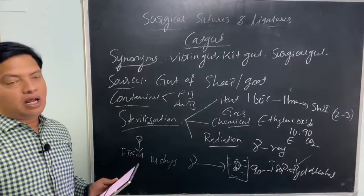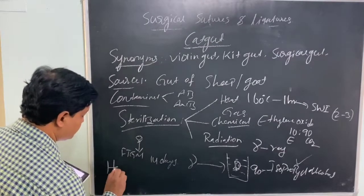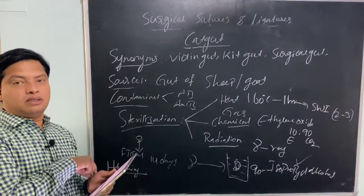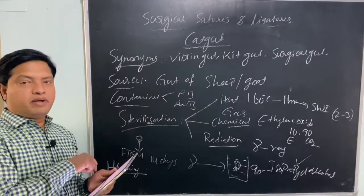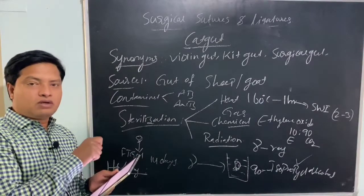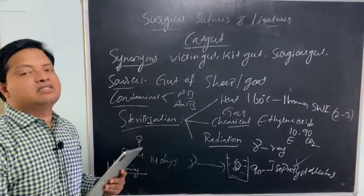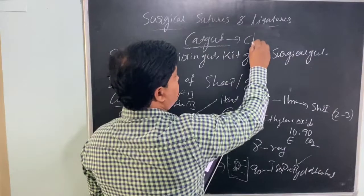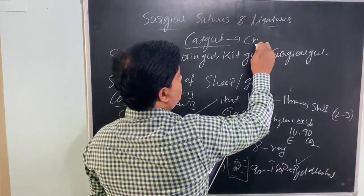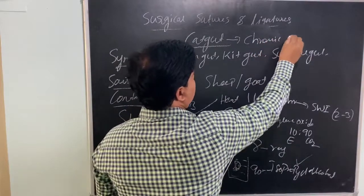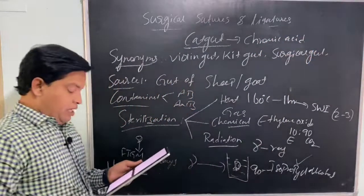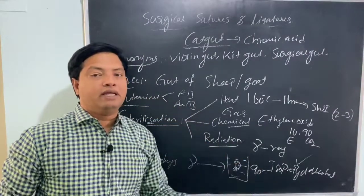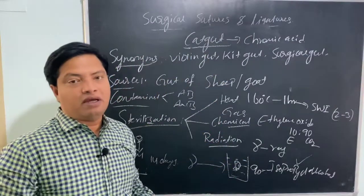The last part is hardening. We want the suture to be hard so it does not break while stitching the wound. To increase the strength of catgut, treat it with chromic acid. Treating catgut with chromic acid increases its strength.